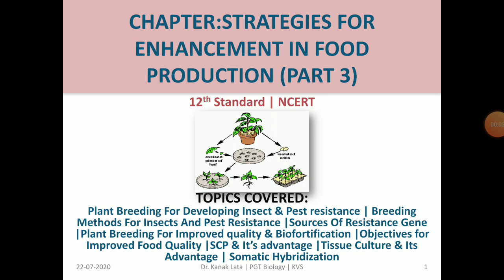Good morning students. Today I am taking Strategies for Enhancement in Food Production, Part 3 of 12th Standard. In this we will discuss about plant breeding for developing insect and pest resistance, breeding methods, sources of resistance genes, plant breeding for improved quality and bio-fortification, objectives for improved food quality, single cell protein (SCP) and its advantages, tissue culture and its advantages, and somatic hybridization.